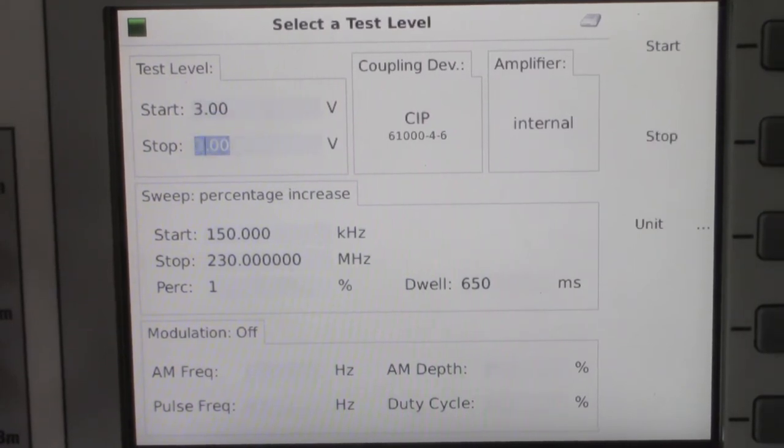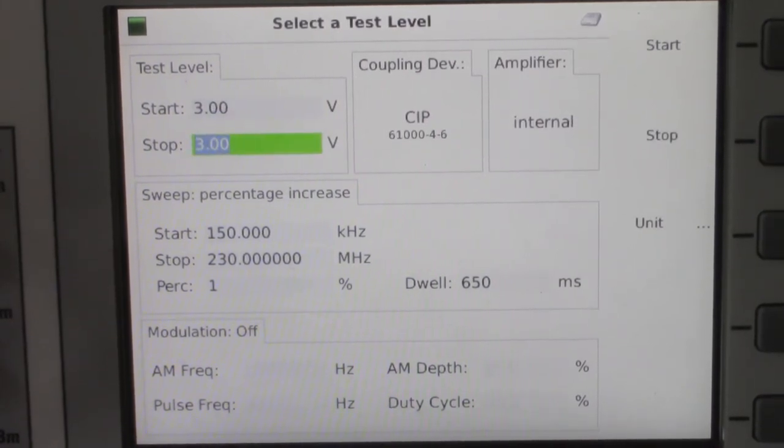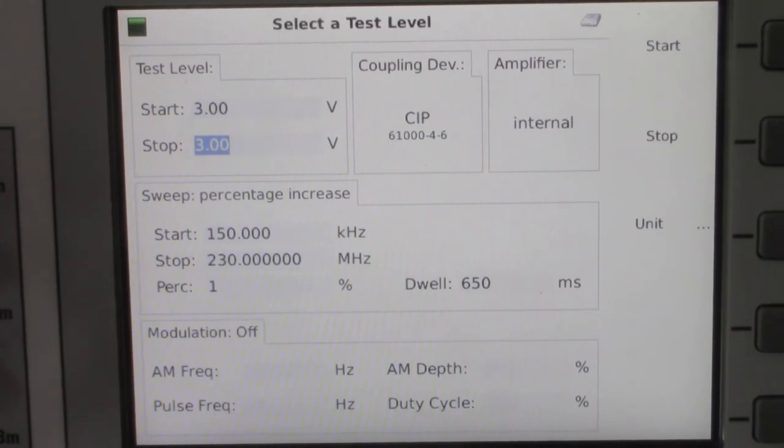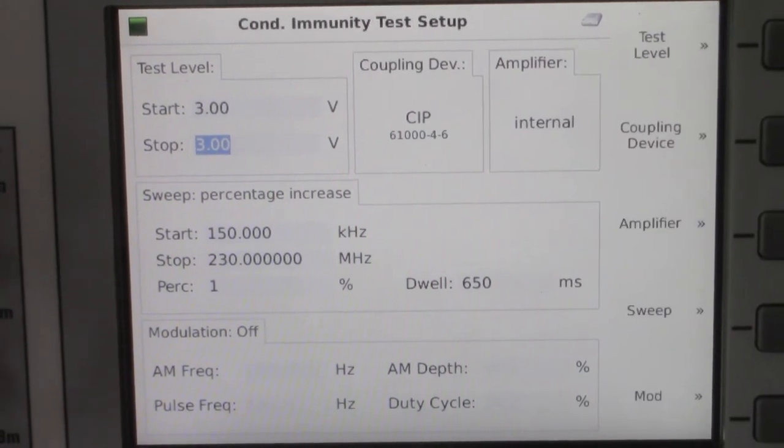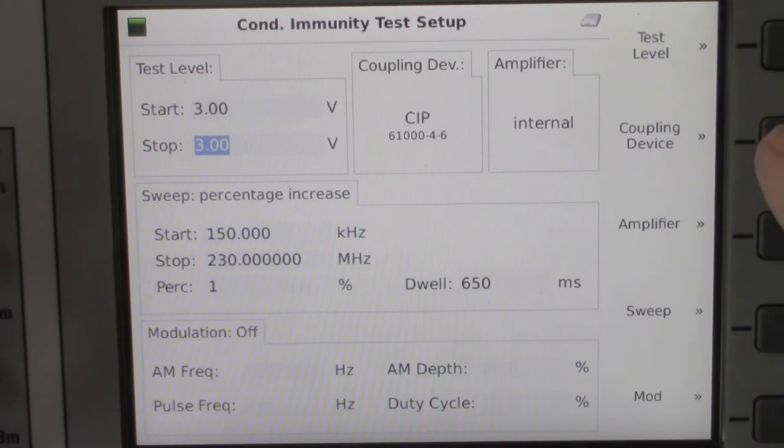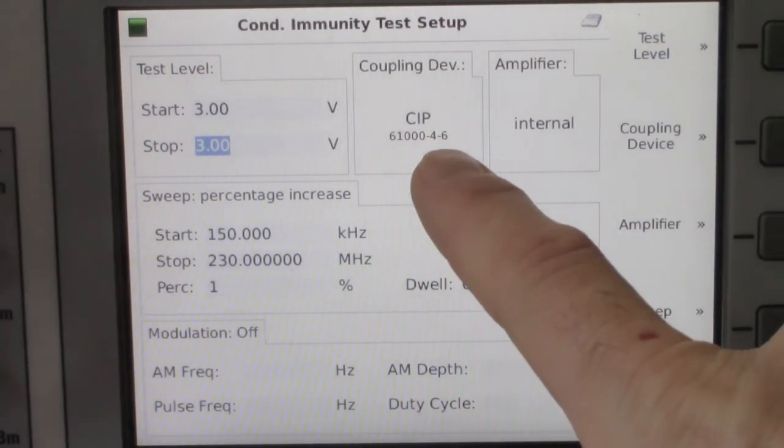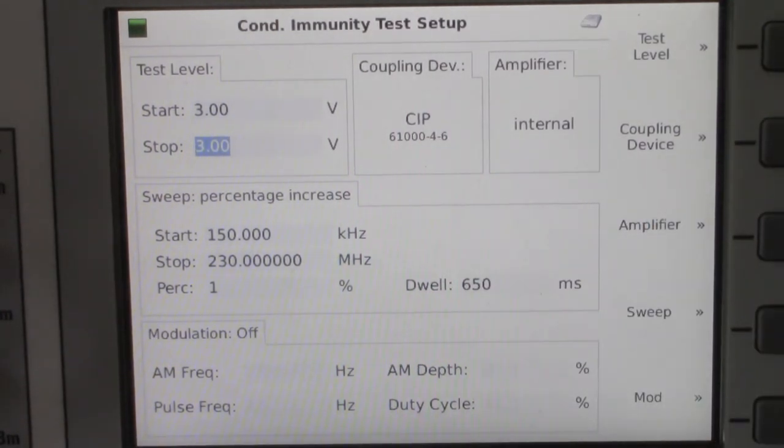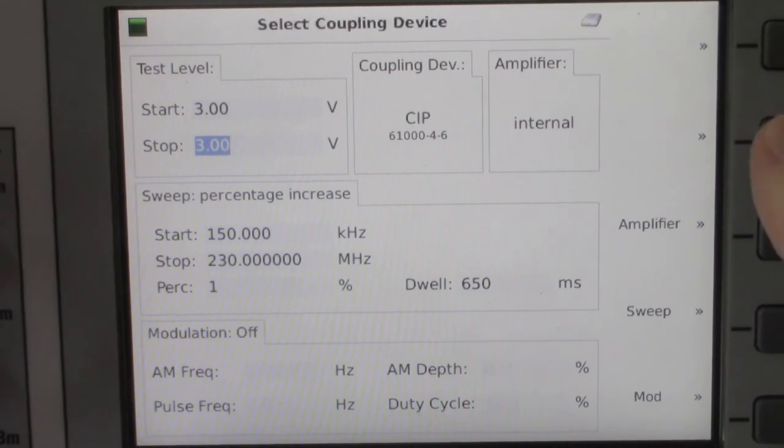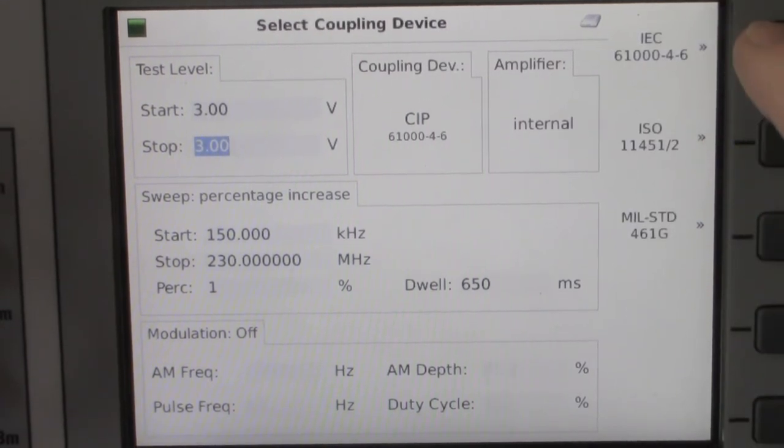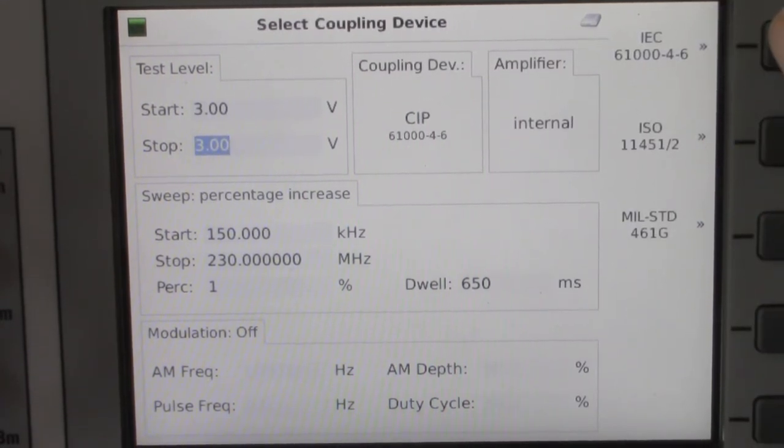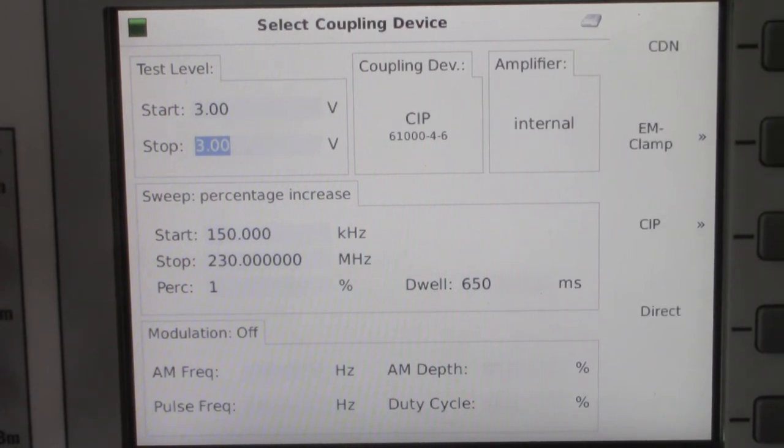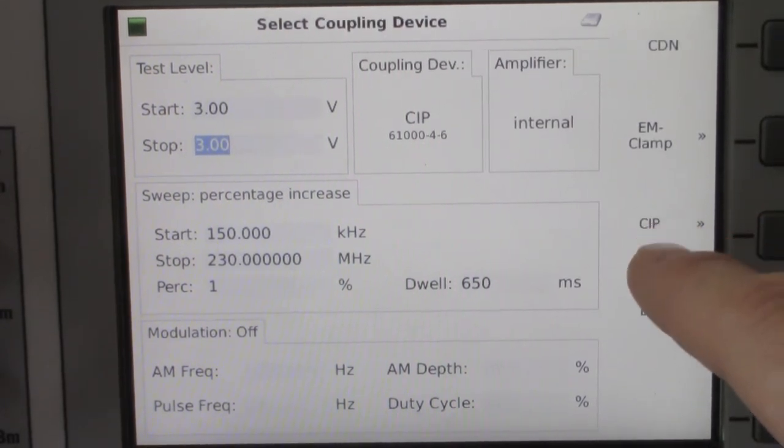Stop is right below that, 3 volts. We're happy with that, we're hitting back. Then we're going to hit coupling devices. CIP IEC 61000-4-6, you'll see that menu option there. We're going to select current injection probe or CIP.